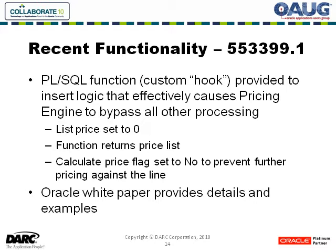You tell it what price to put on the line, and then the application will set the calculate price flag to no, which means no further actions will take place on that line from a repricing standpoint. That will end the pricing call for that particular line. Rather than going through all the other attribute mapping and modifiers, if you provide this function and the return is $0, that's the end of the pricing call for that line.